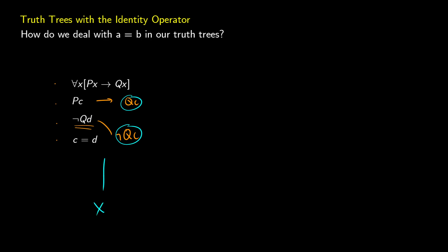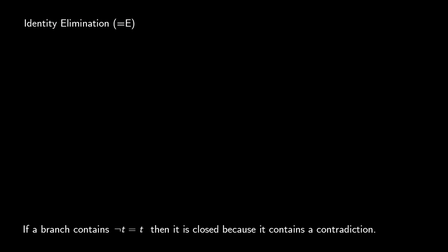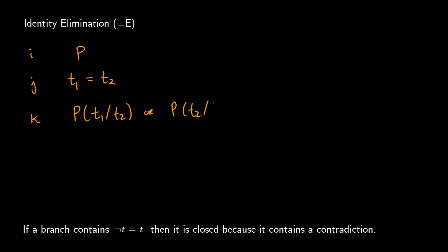How do we make a tree where this ends up being closed because we have a contradiction? We'll use identity elimination as a new rule. If we have some well-formed formula on line i, and on line j we're told that some term t1 is equivalent to another term t2, then on line k we get the predicate where t1 replaces t2, or where t2 replaces t1 — and we note it came from i and j via identity elimination.